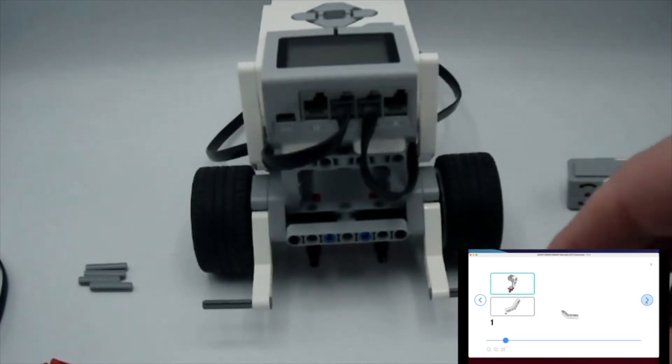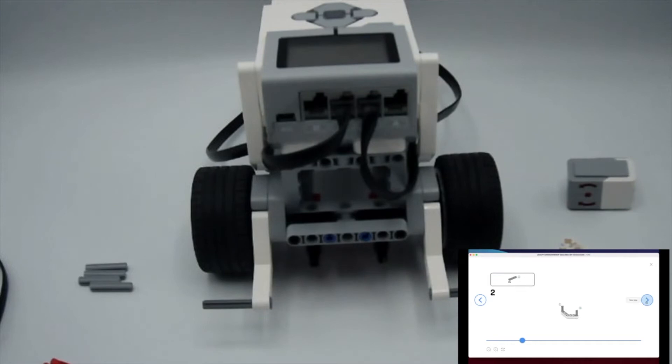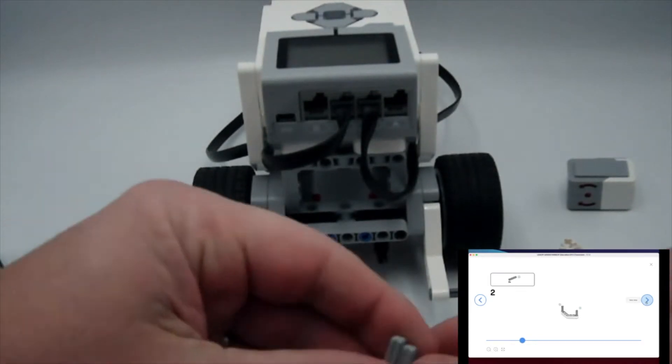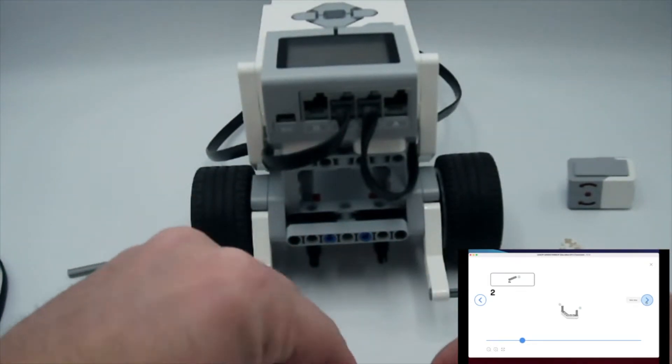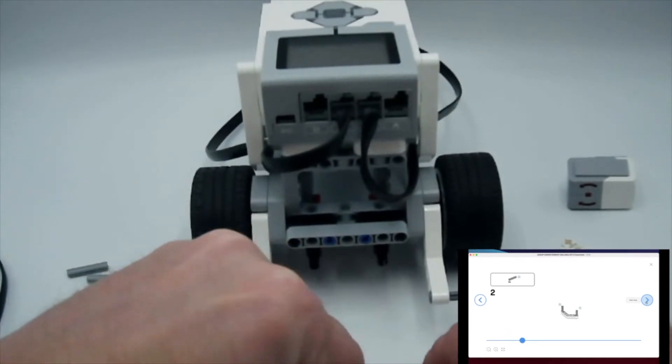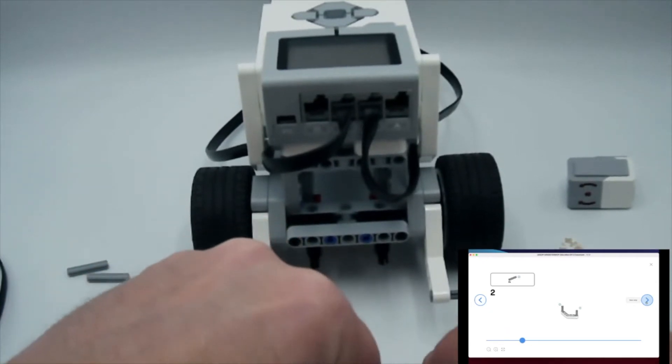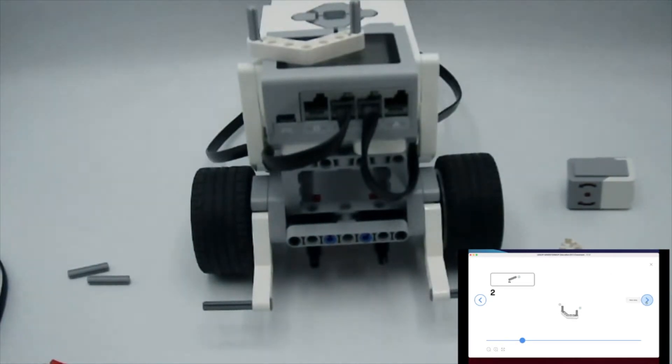We'll start with one of these bent beams here and we're going to add the three-length gray axles to each of the axle pins. Just slot those in just like you see there. We're then going to go ahead...